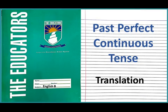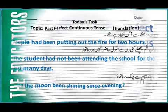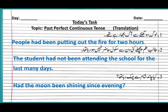Here we have the English notebook. You have to make a title page and write 'Past Perfect Continuous Tense Translation' as I have written for you. Now prepare the notebook page for today's task — write down day, date, today's task, and the topic: past perfect continuous tense translation.